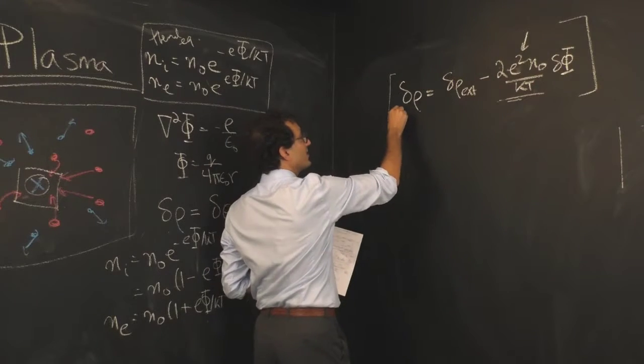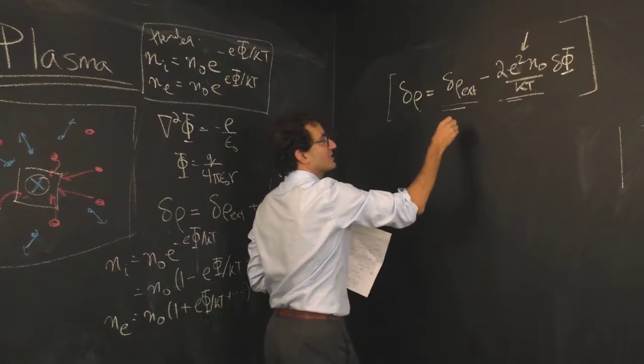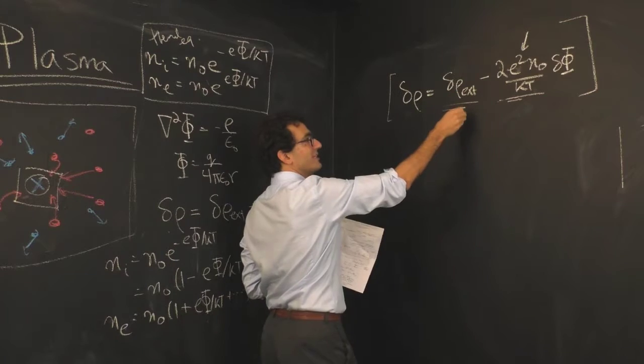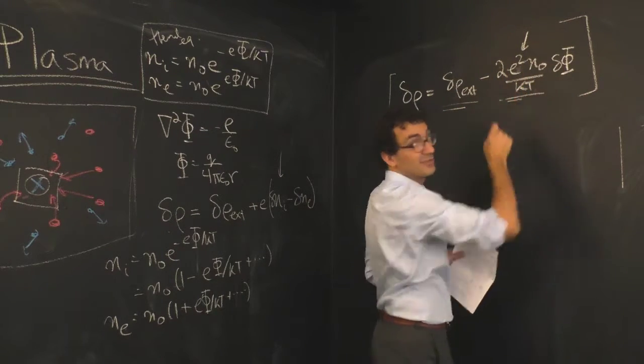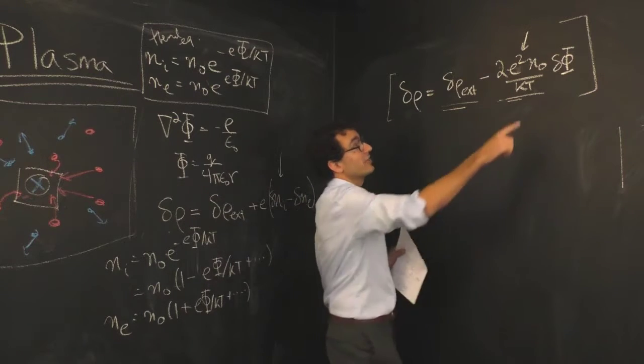So notice what we have here. We introduce the external charge, but that external charge is partially canceled by this virtual cloud, or in the case of the plasma, a non-virtual cloud, an actual cloud of these positively and negatively charged particles.